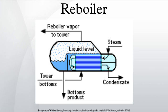Thermosyphon Reboilers: Thermosyphon reboilers do not require pumping of the column bottom's liquid into the reboiler. Natural circulation is obtained by using the density difference between the reboiler inlet column bottom's liquid and the reboiler outlet liquid-vapor mixture to provide sufficient liquid head to deliver the tower bottoms into the reboiler. Thermosyphon reboilers are more complex than kettle reboilers and require more attention from the plant operators. There are many types of thermosyphon reboilers including vertical, horizontal, once-through, or recirculating.